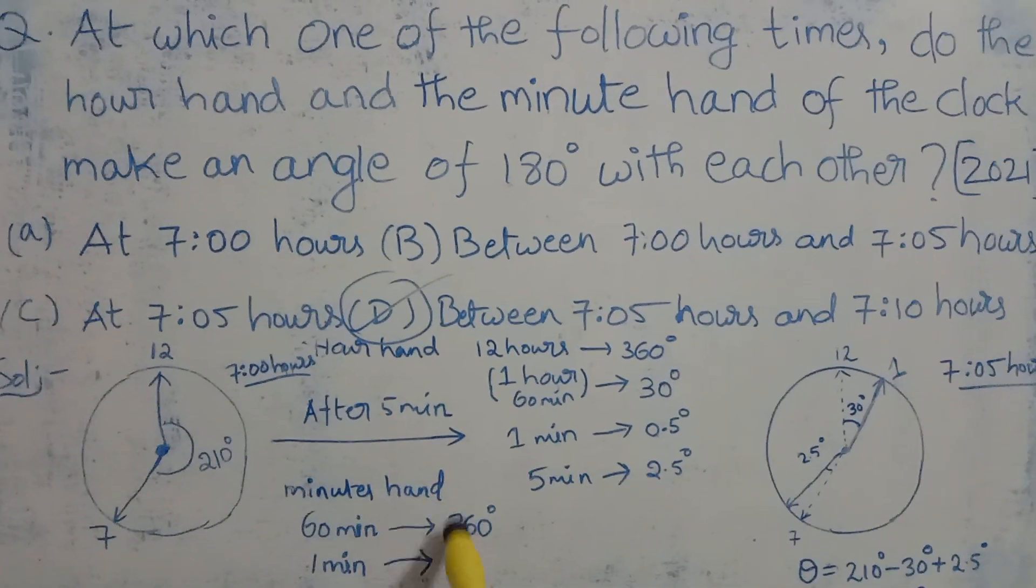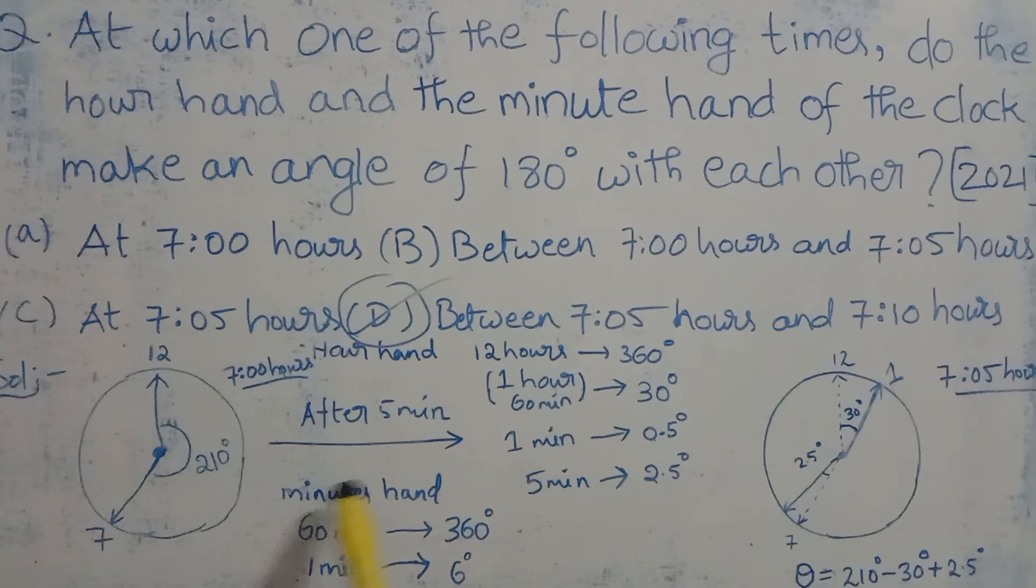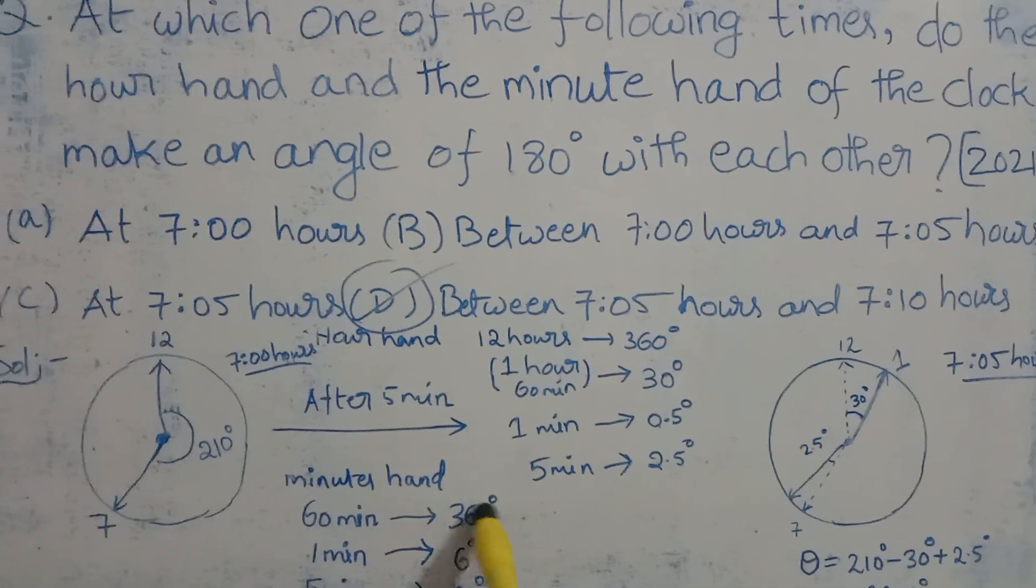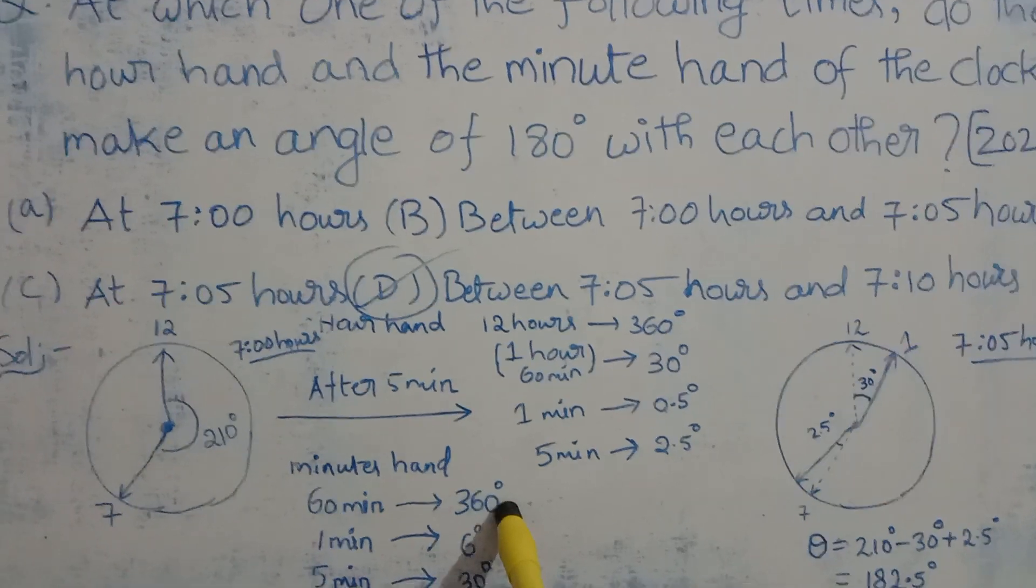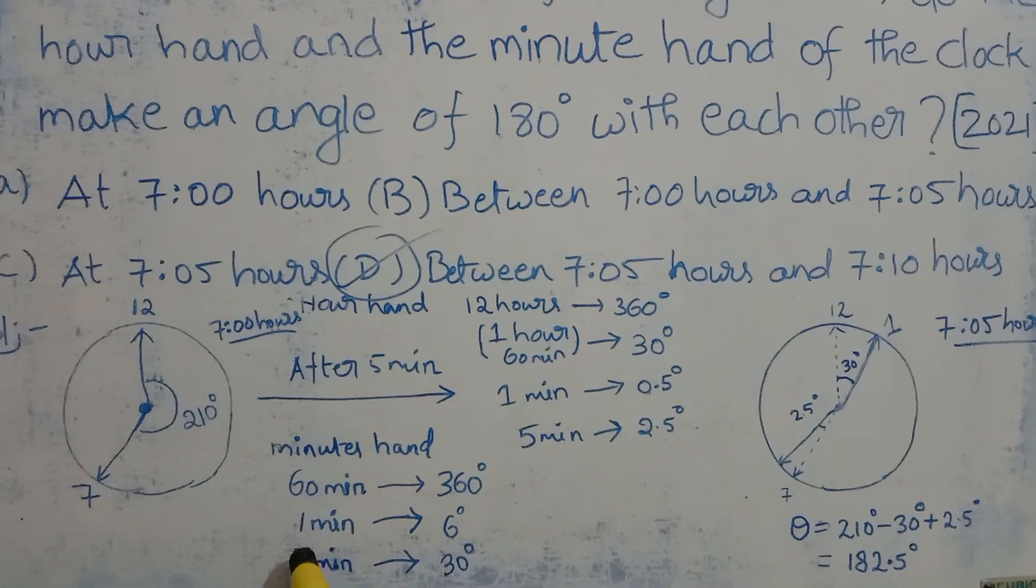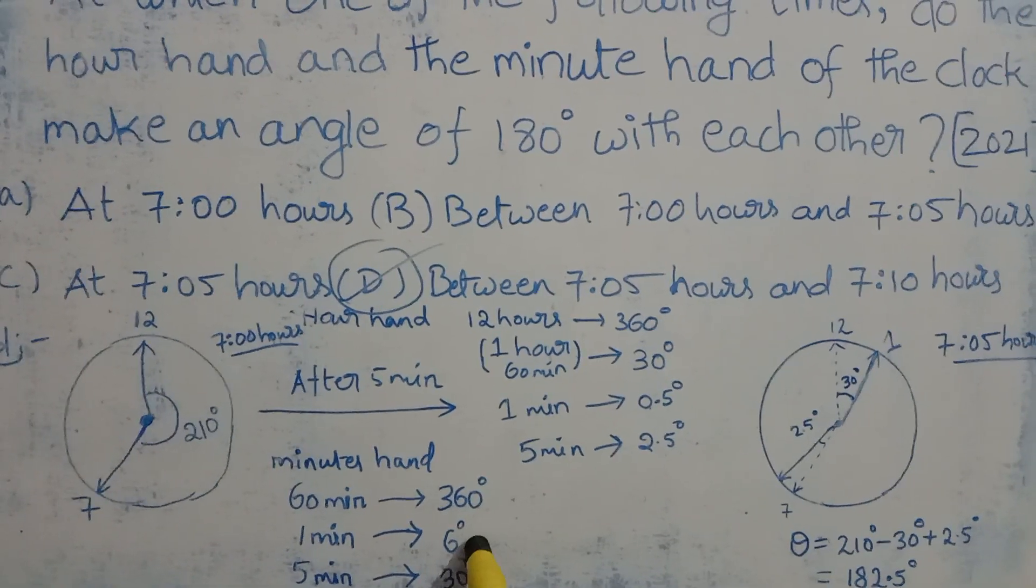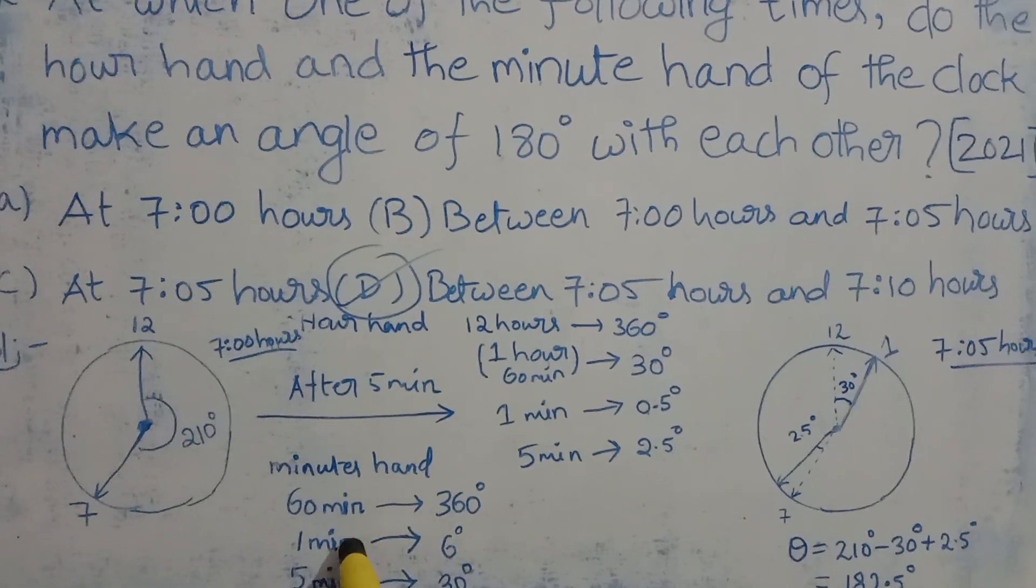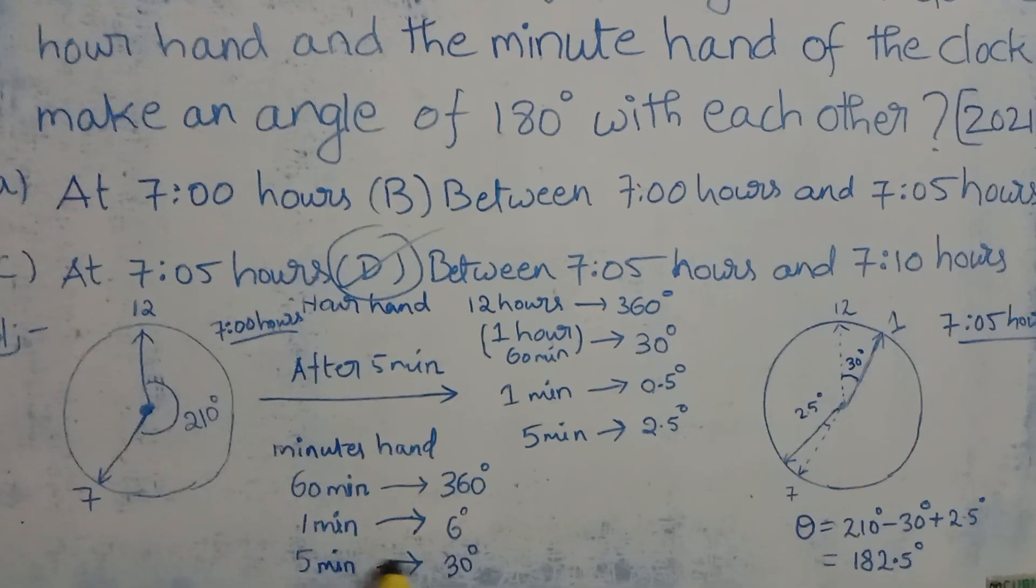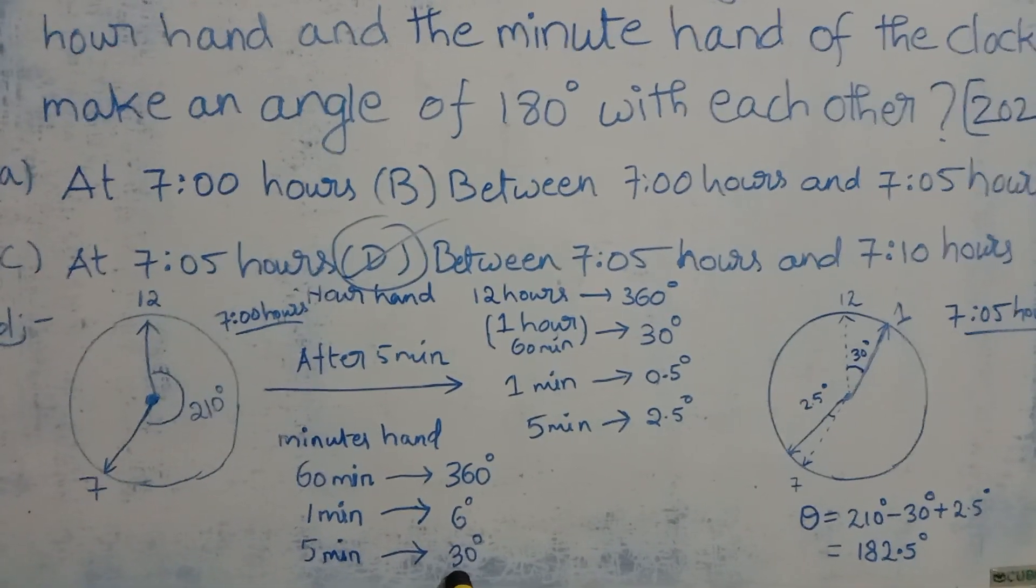Let's see how much the minute hand will sweep in 5 minutes. The minute hand sweeps 360 degrees in 60 minutes, which means it sweeps 6 degrees in 1 minute. In 5 minutes it will sweep an angle of 30 degrees.